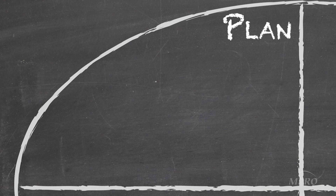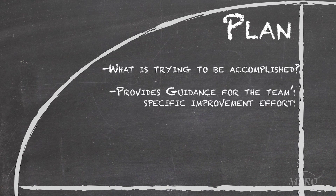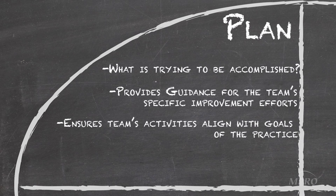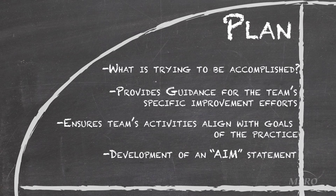The Plan segment of PDSA answers the question of what is trying to be accomplished, provides guidance for the team's specific improvement efforts, and ensures that the team's activities align with the strategic goals of the practice. It needs to be clearly stated and numerical, as well as represent a challenge for the practice or provider. An example of an effective AIM statement might be: by June 1, 2013, our practice will be able to identify 100% of our patients with hypertension using the electronic health record.